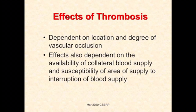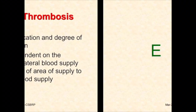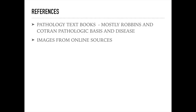The effects of thrombophlebitis depend upon the location and degree of vascular occlusion, availability of collateral blood supply, and susceptibility of the affected tissue to hypoxia. References for most pathology lectures include pathology textbooks, mainly Robbins and Cotran's Pathologic Basis of Disease, and images from online sources.